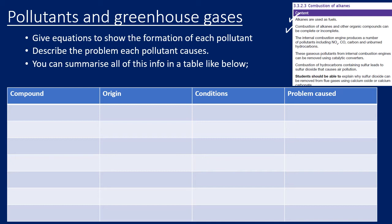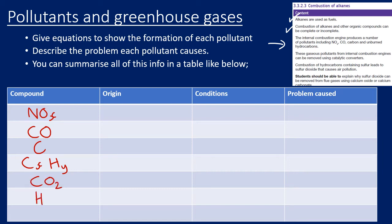Now moving on to pollutants — the spec is quite clear on what we need to know. We have NOx, CO, C (soot), and unburnt hydrocarbons from the internal combustion engine. We will also produce carbon dioxide, water, and SO2. The spec notes that combustion of hydrocarbons containing sulfur leads to sulfur dioxide. We'll go through each of these in a table covering where they come from, conditions, and problems caused.